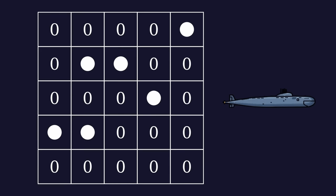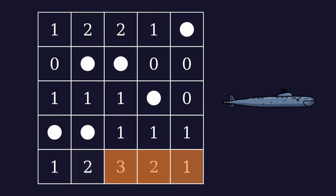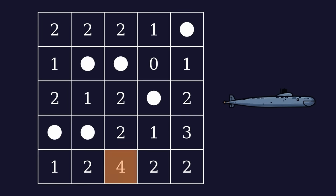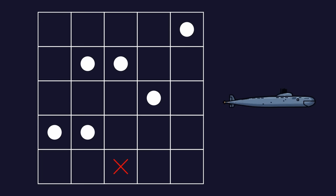We pick the square with the highest probability and shoot it. If it's a miss, we go through all possible submarine positions again and update our probability map. If it's a hit, we shoot the squares around to sink the ship.